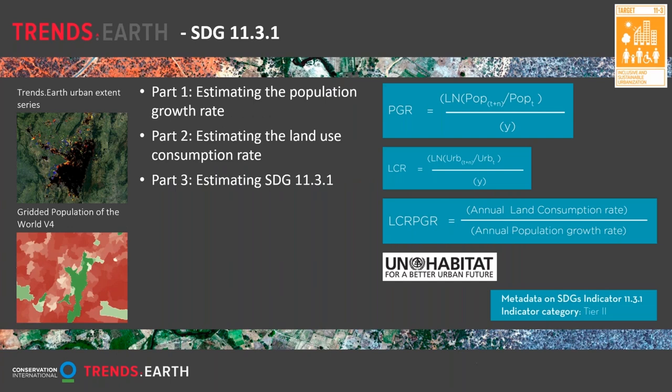The population growth rate is calculated as the natural log of the population at time T+1 over the population at time T — for example, the population in 2015 divided by the population in 2010. The land use consumption rate is the natural log of the urban extent at time T+1 over the urban extent at time T. The final indicator is the ratio of these two: the land consumption rate divided by the population growth rate. Remote sensing can support calculation of this SDG, specifically for estimating the land consumption rate.